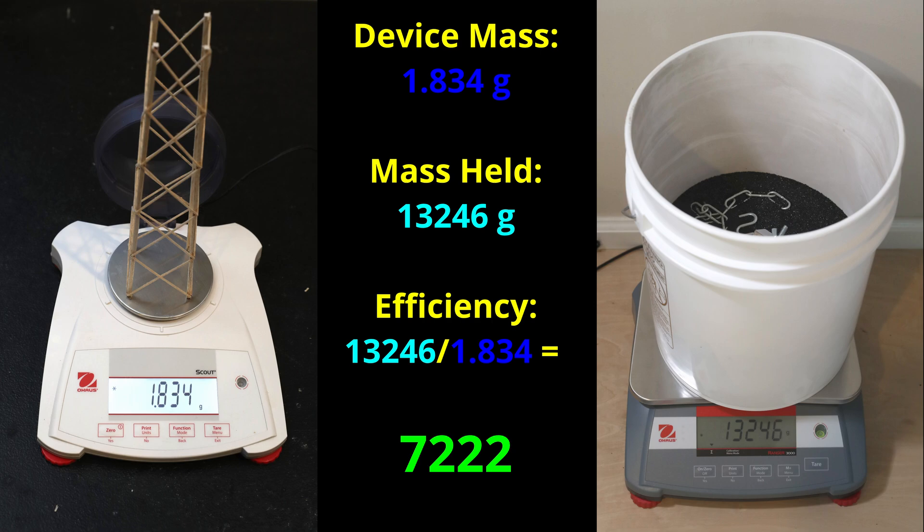For example, here is a tower column that weighs 1.834 grams and when it broke during testing, the bucket with sand, loading block, and chain weighed 13,246 grams.